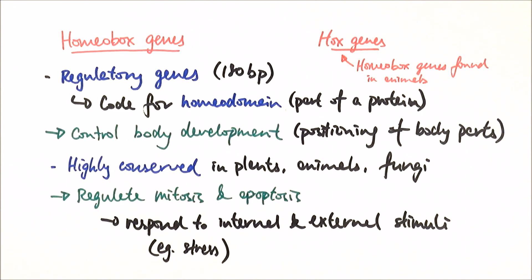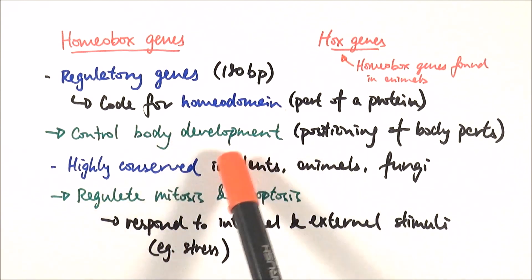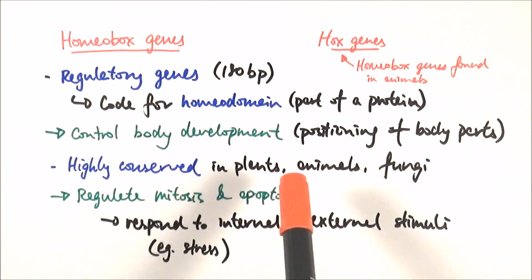If an exam gives you a picture of a deformed organism — for example a double-headed cow — and asks you to suggest a reason for this phenomenon, you can say that the homeobox or hox genes of this organism have been mutated. Because homeobox genes are regulatory genes that control body development, a mutation will cause a different body arrangement. They should normally be highly conserved, so a mutation produces a twin-headed cow rather than a normal one. Be able to define and explain based on the information given, and you'll be fine.